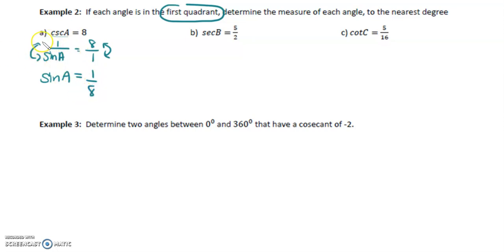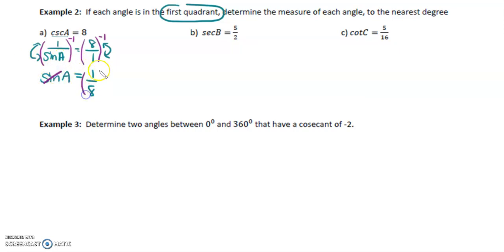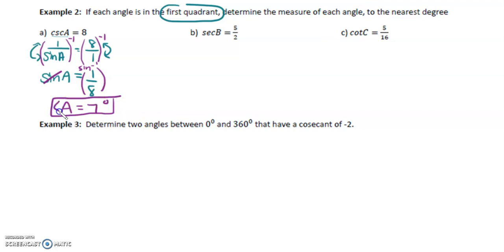Reciprocating is the same as raising both sides to the exponent negative one — negative one being the exponent just to reciprocate. At this point we can put this into our calculators. We're solving for a, not sine a, so we take the sine inverse of one over eight. Our answer for angle a is seven degrees.